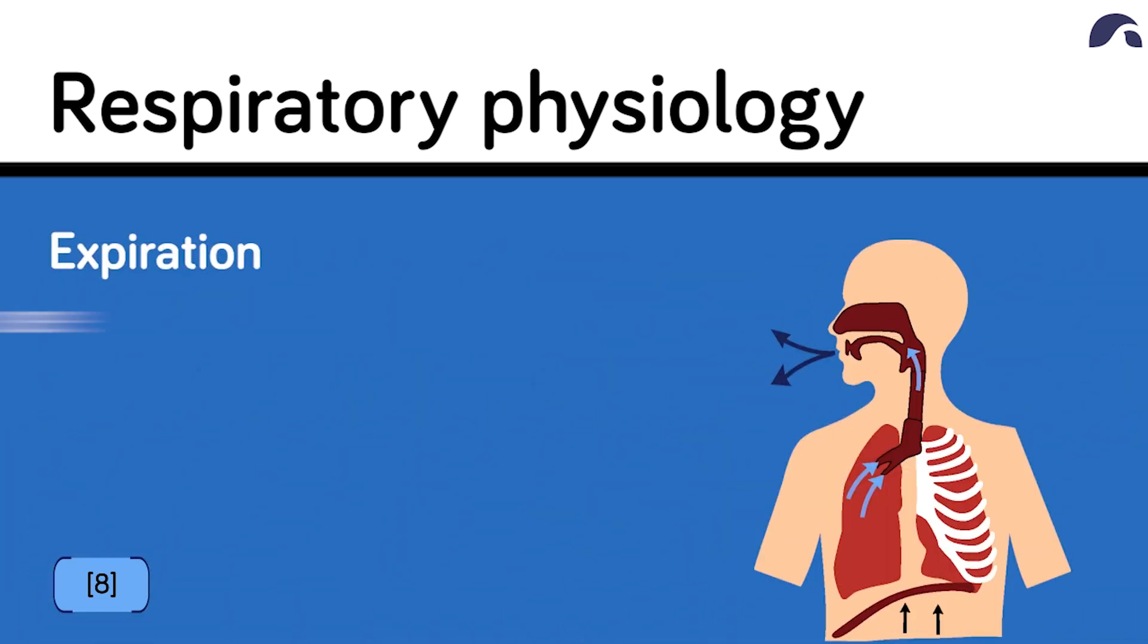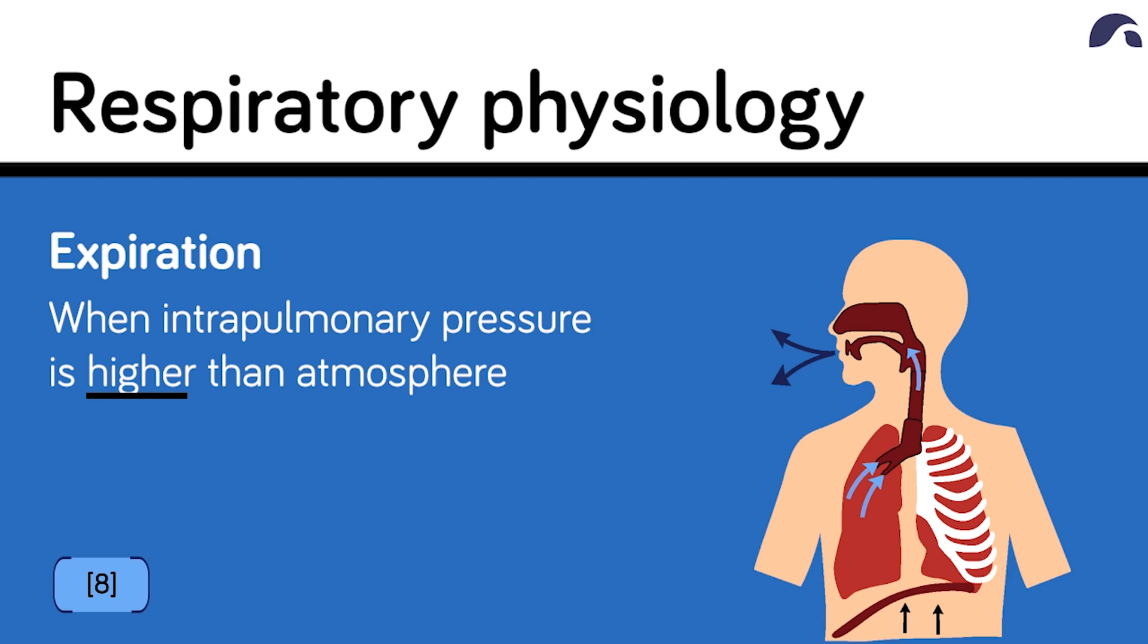Expiration occurs when the intrapulmonary pressure is higher than the atmosphere, and air will flow out of the lungs.